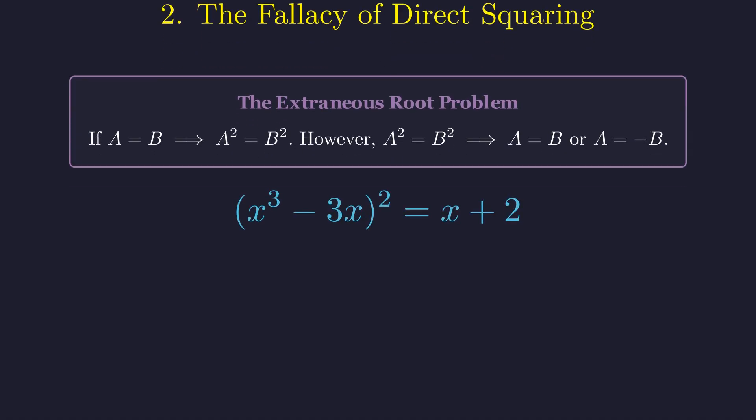If we did square both sides, here's what we'd get. This expands into a 6-degree polynomial. Not only is this unwieldy to solve, but it's contaminated with those fake solutions I mentioned. We need a cleaner approach.